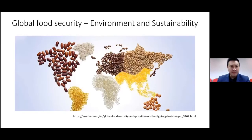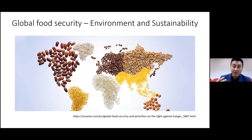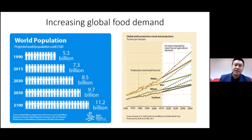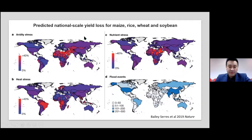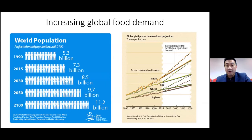Food security is a global issue. Different places are heavily reliant on different kinds of crops — nobody wants hunger, we want food security. The world population has been increasing and is predicted to keep on increasing, from 5.3 billion now to more than 11.2 billion by the year 2100. When you look into global yield production, there needs to be an ever-increasing trend in yield in order to meet this growing food demand.